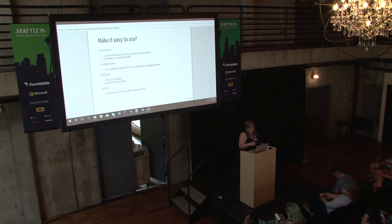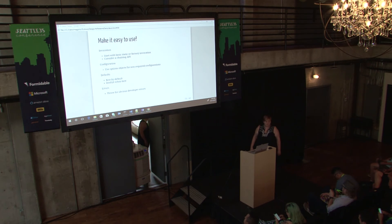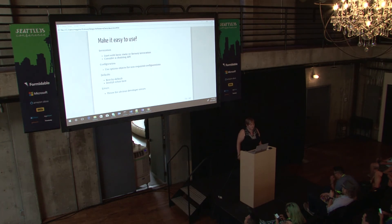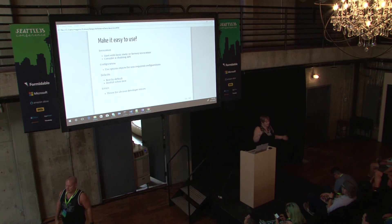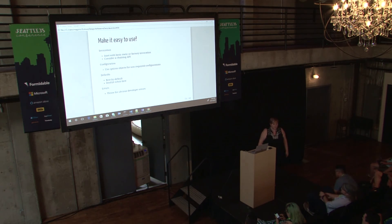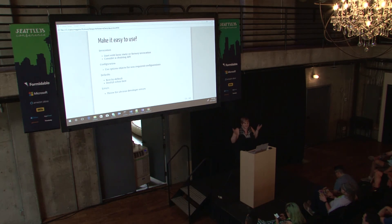So, rolling everything up: make your libraries easy to use. Don't get fancy — usually that just frustrates your users. The less stuff you put in there for them to think through and worry about, the better. For invocation, either static or a factory method is going to work for most use cases. For configuration, required parameters up front, then the options object at the end. For defaults: if there is undoubtedly a 90-95% case best answer, then default to that. But if you're below 90%, make the user choose.